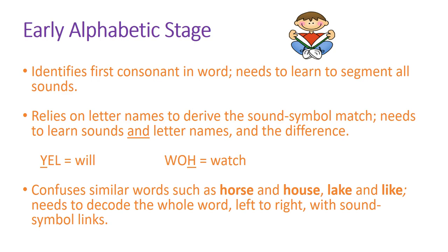Children then move into the early alphabetic stage. In this stage, they're starting to get awareness and can identify first consonants in words. These are students who will guess at a word based on the first consonant they see, or try writing words with just the first consonant. They develop awareness first of what words start with, then of word endings — with middle sounds coming much later. In the early alphabetic stage, they're really just getting those first consonant sounds.